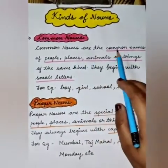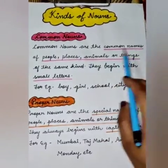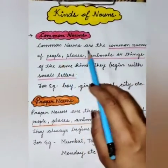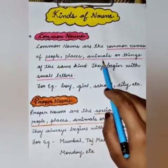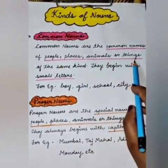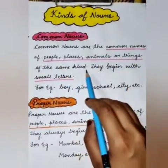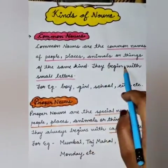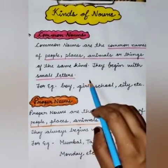Common nouns are the common names of people, places, animals or things of the same kind. They begin with small letters.